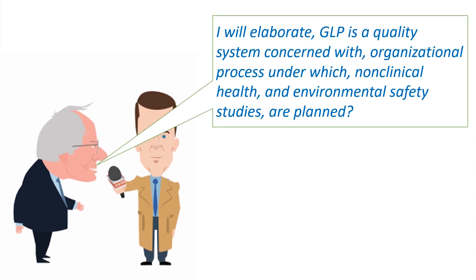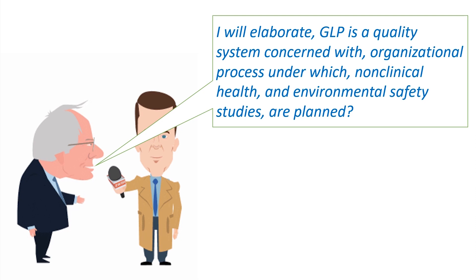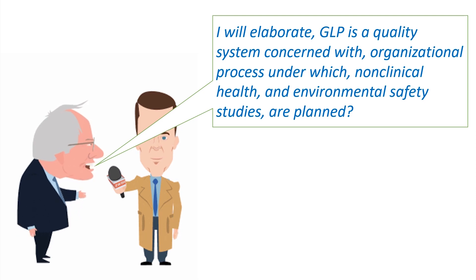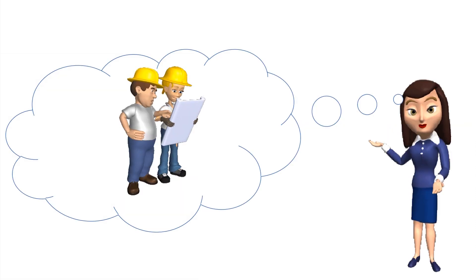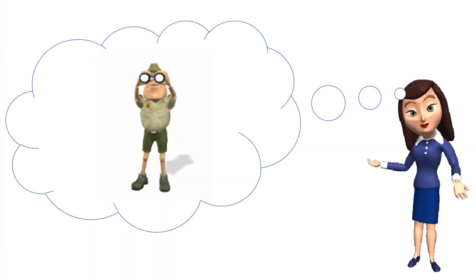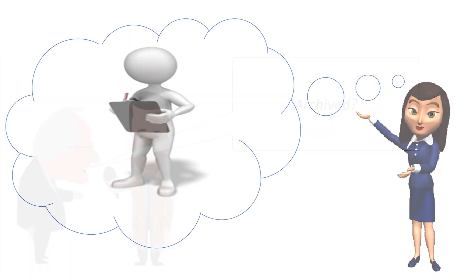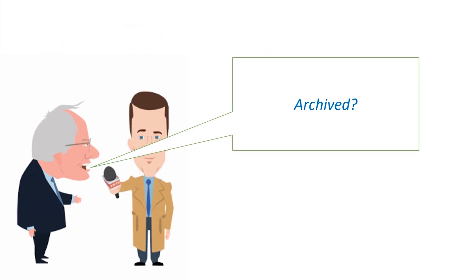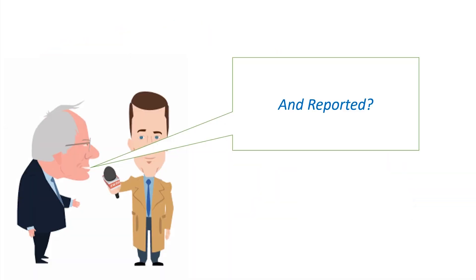Let me elaborate. GLP is a quality system concerned with organizational process and conditions under which non-clinical health and environmental safety studies are planned, and also how they are performed, monitored, recorded, archived, and reported.